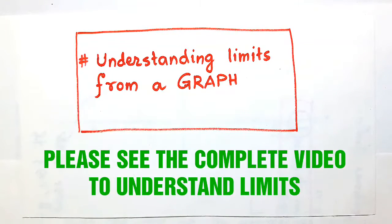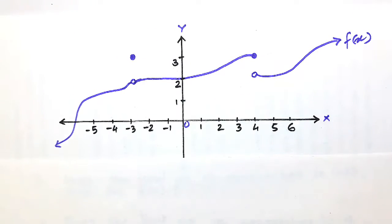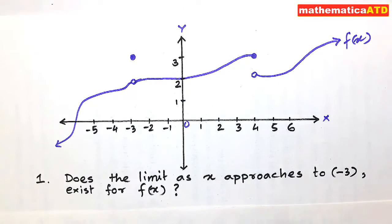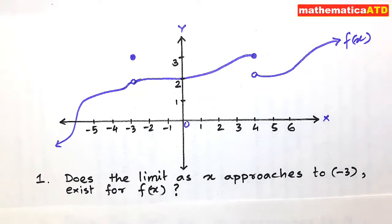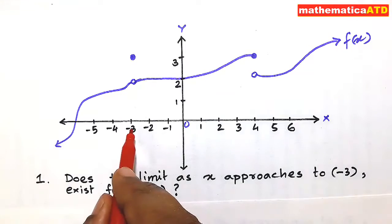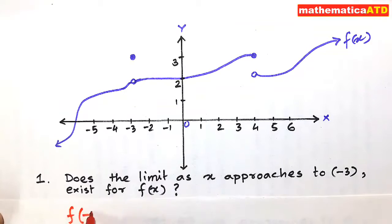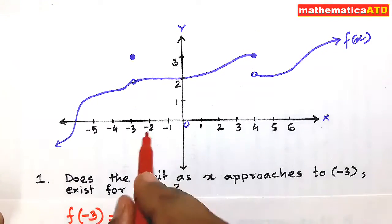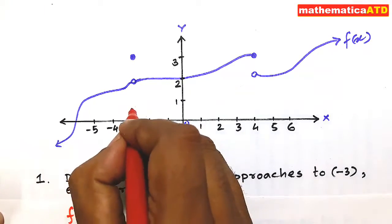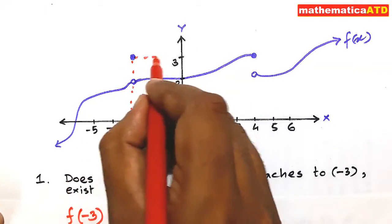Understanding limits from a graph — this is our second topic on graphs. We consider this graph y = f(x). The question is: does the limit as x approaches -3 exist for f(x)? If you are asked only to find the value of f(-3), the ordinate value is 3 units.